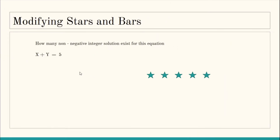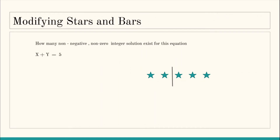To solve the previous problem we took five stars because n was five, and to divide the stars among two variables we used bars as dividers. A single bar divides all the stars into two parts — a left region belonging to x and a right region belonging to y. For example, the left region containing two stars and the right region containing three stars corresponds to the solution 2 + 3 = 5. Previously, the bar could move anywhere from leftmost to rightmost position.